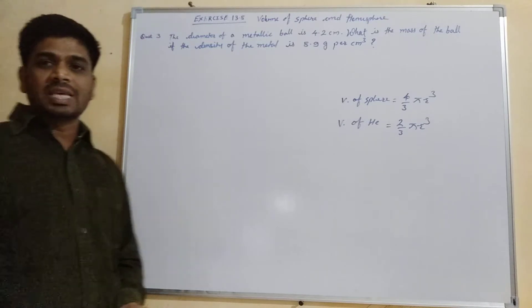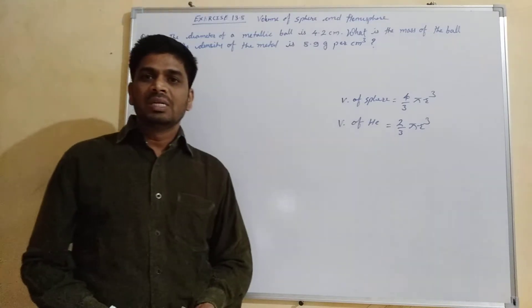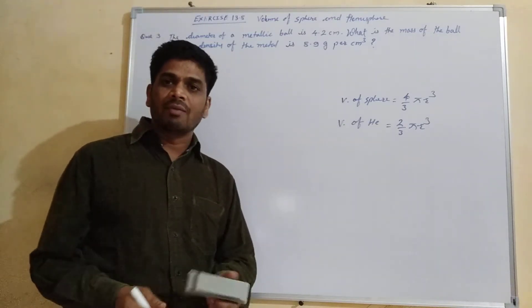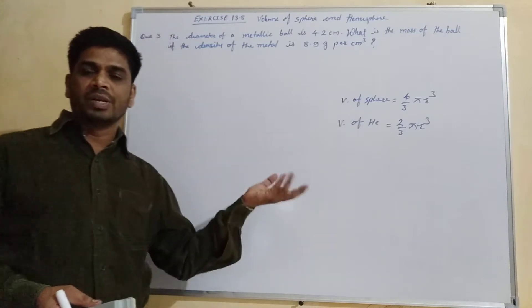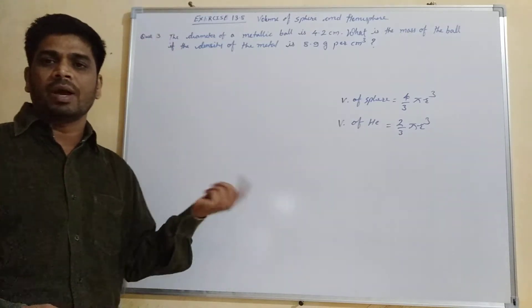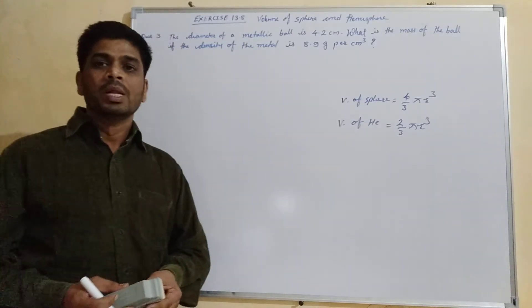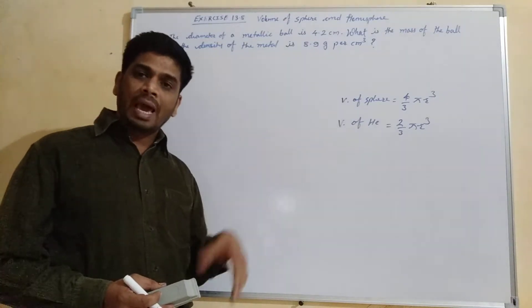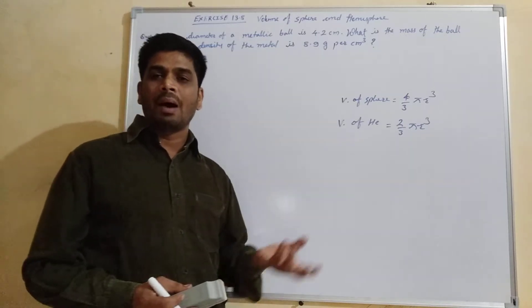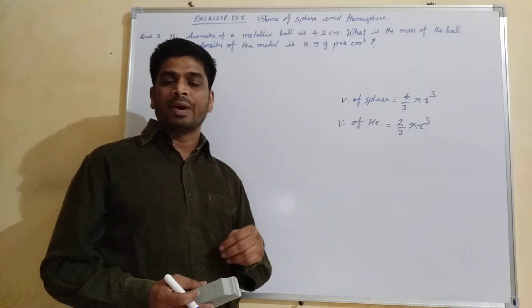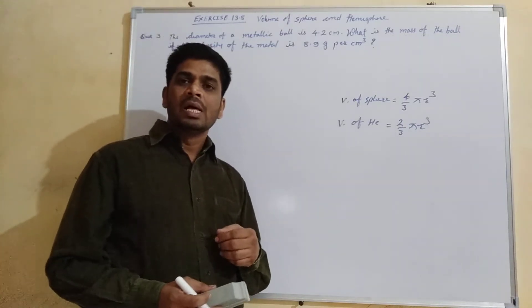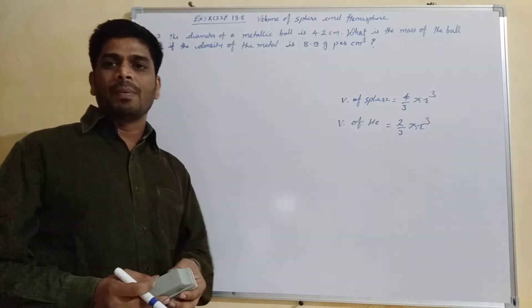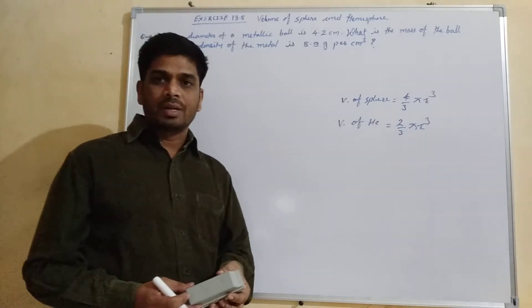The first and second questions involve finding the volume — in the first question the radius is given, and in the second question the diameter is given. For the second question, we first find the radius and then apply the volume of a sphere formula.